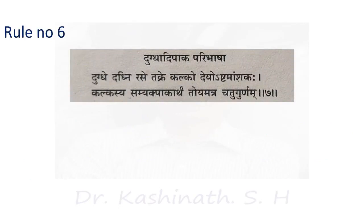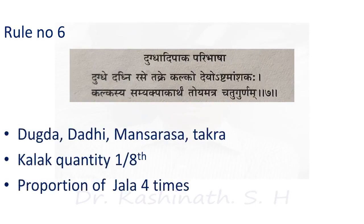Rule number six: Dugdadi Paaka Parivasha. Dugdadi Rasi Takre Kalko Dey Ashtam Mahamsa Kaha — if Dugdha, Mamsa Rasa, Takra, etc. are mentioned as Drava Drava in the formulation, then the quantity of Kalka Drava will be one-eighth of the Sneha. The proportionality of Jala remains the same — four times that of Sneha.